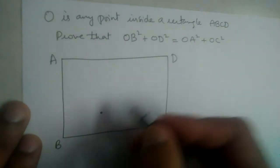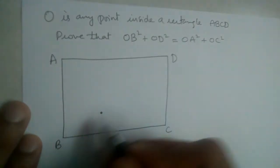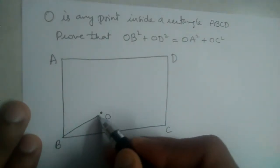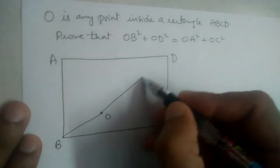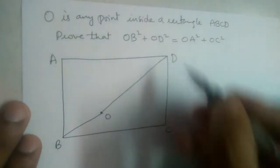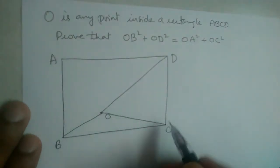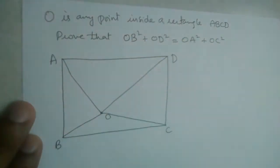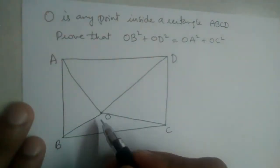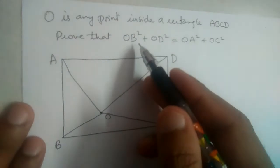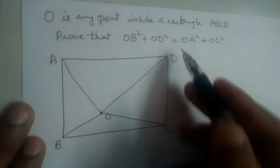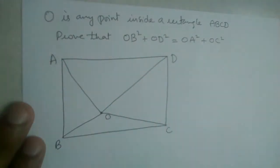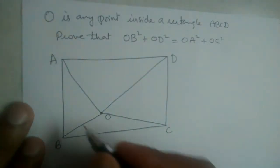This is point O. We need to prove OB² + OD² = OA² + OC². So let us join O with all the vertices.